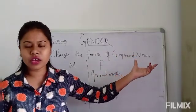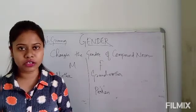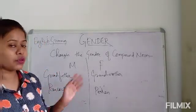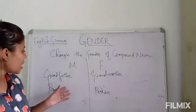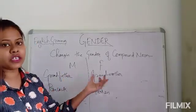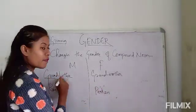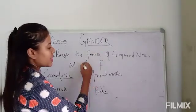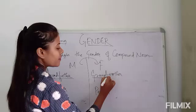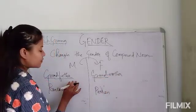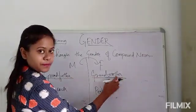Compound nouns are words made up of two or more other words. While changing the gender of a compound noun, the other part of the compound word is changed. For example, 'grandfather' in masculine — when changed to feminine, 'grand' remains the same and only 'father' changes to 'mother', giving us 'grandmother'.